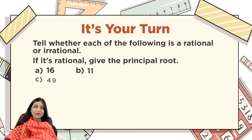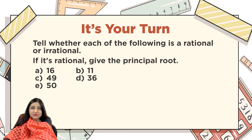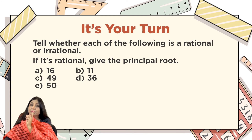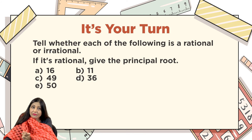Now it's your turn. Tell whether each of the following is rational or irrational, and if it's rational, give the principal root: square root of 16, square root of 11, square root of 49, square root of 36, and square root of 50. If it's a perfect square it's rational; if it's not a perfect square it's irrational.